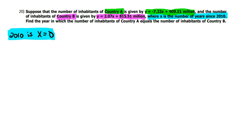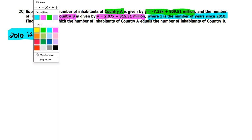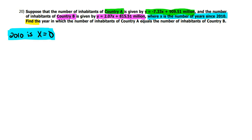Okay, and then it says, here's what we're looking for. Find the year in which the number of inhabitants of Country A equals the number of inhabitants of Country B.